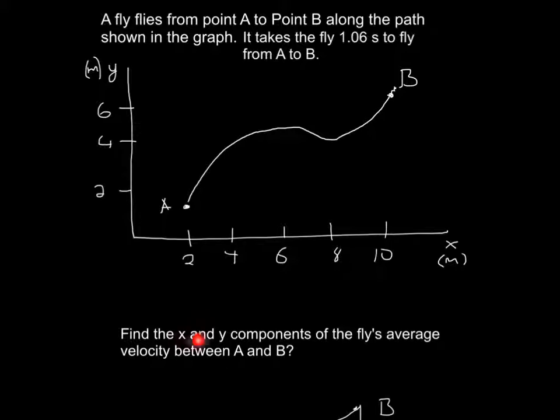So the actual question is, find the x and y component of the fly's average velocity between A and B. We know that the arrow is going to be pointing from A to B like this, and then also,